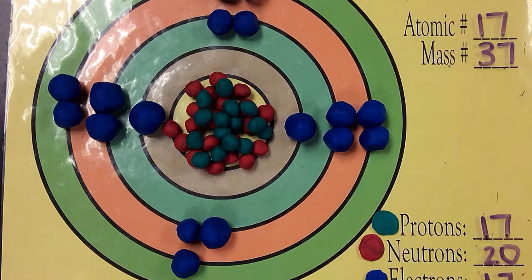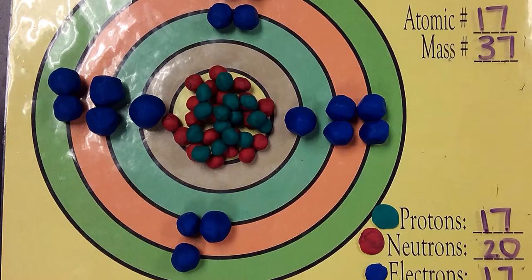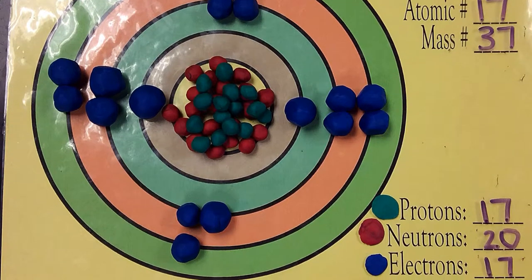This is a model of an isotope. The amount of neutrons is different, which changes the mass of the atom from 35 to 37.